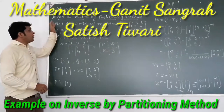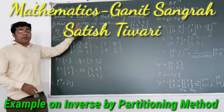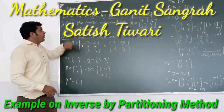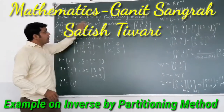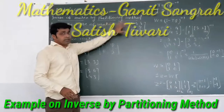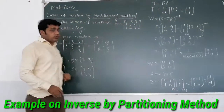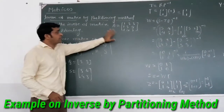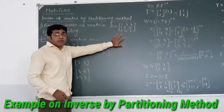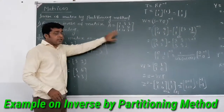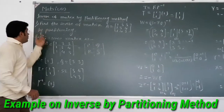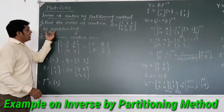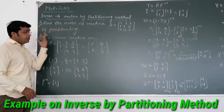We are seeing now the example to find out the inverse by the partitioning method. The example is to find out the inverse of this matrix, which is a 3 by 3 matrix, and we have to find out the inverse by the partitioning method.